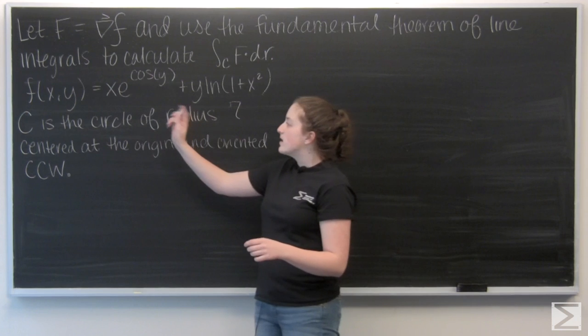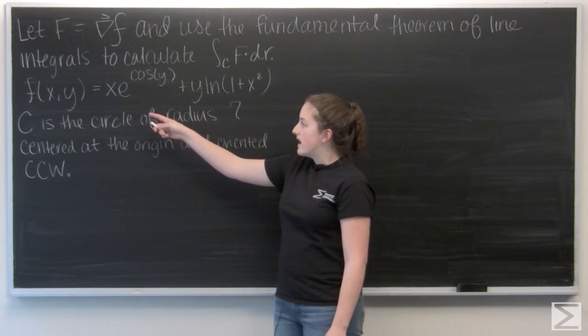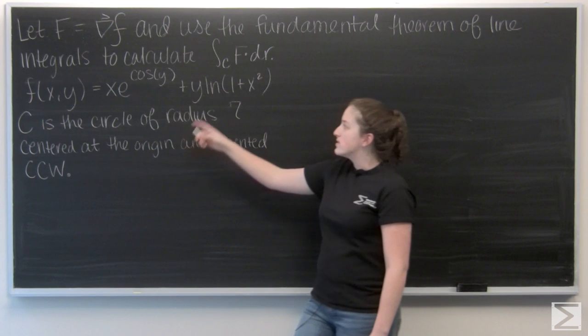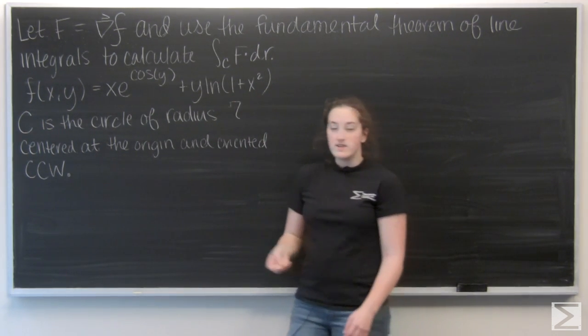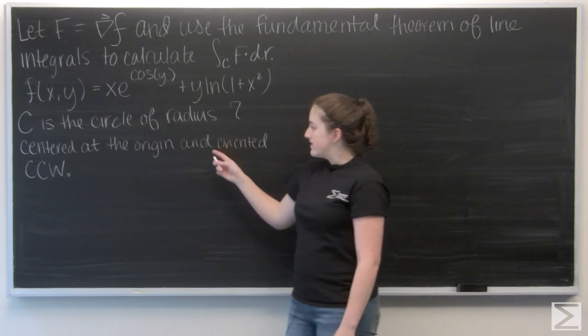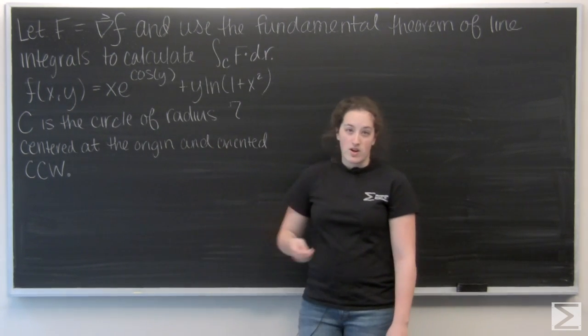Here I'm given a function f of xy and it's x e to the cosine y plus y ln of 1 plus x squared. And C is the circle of radius 7 centered at the origin and oriented counterclockwise.